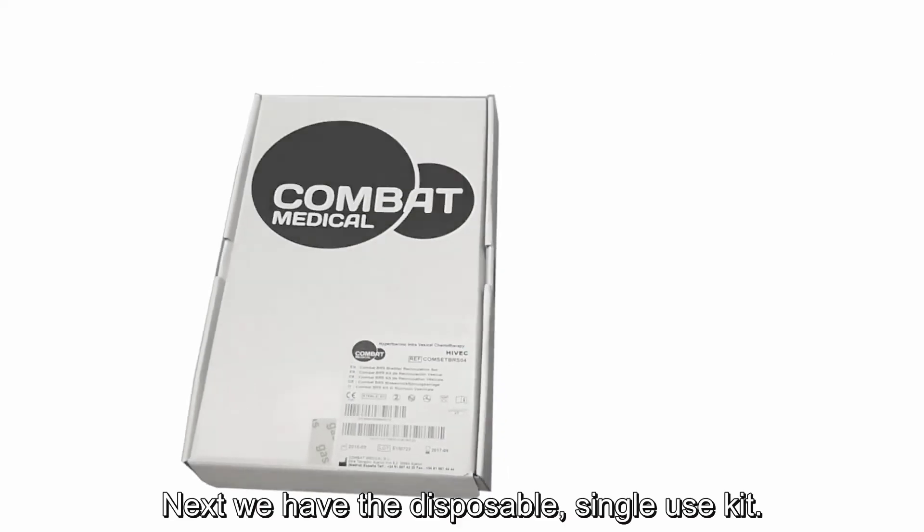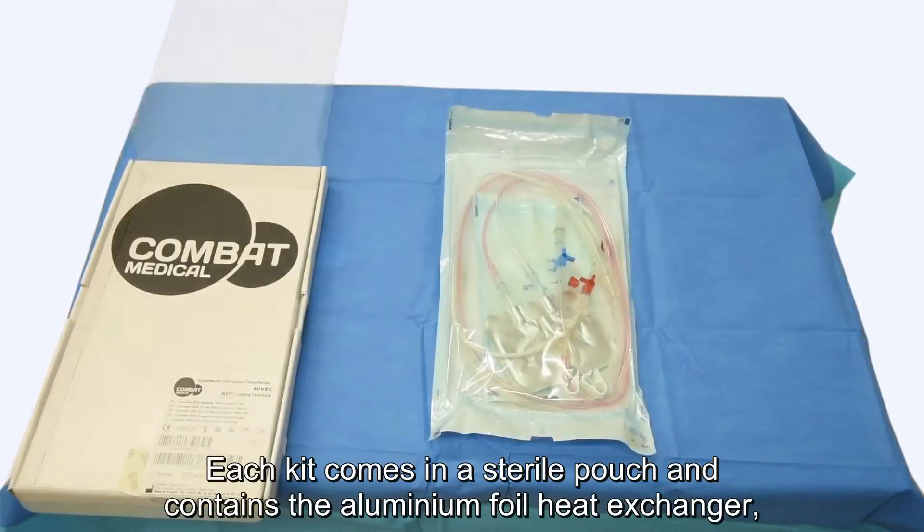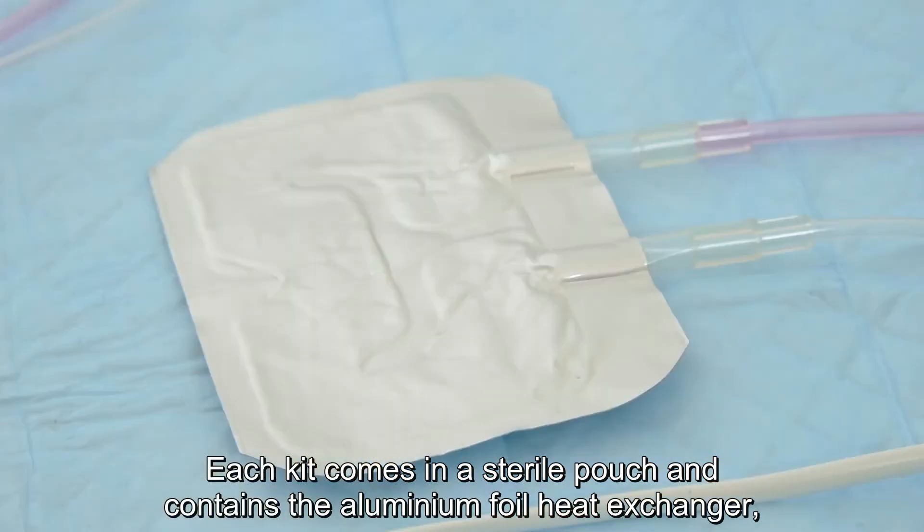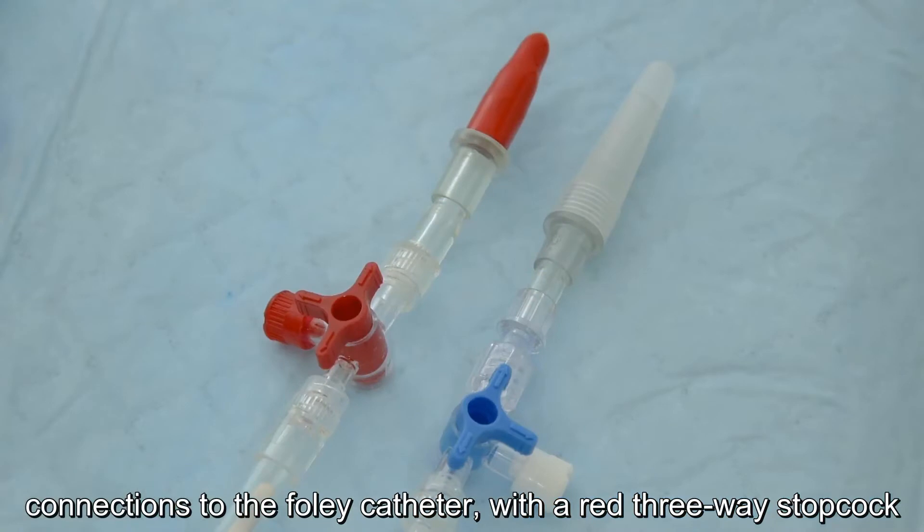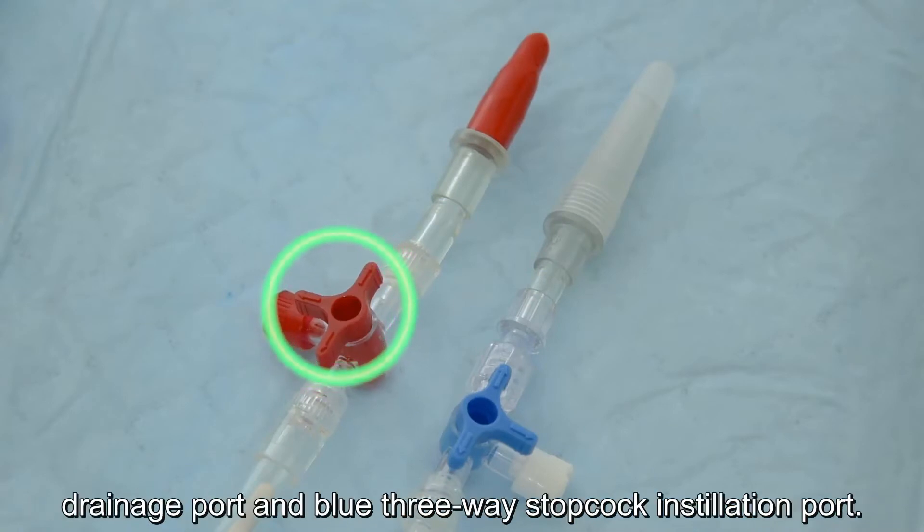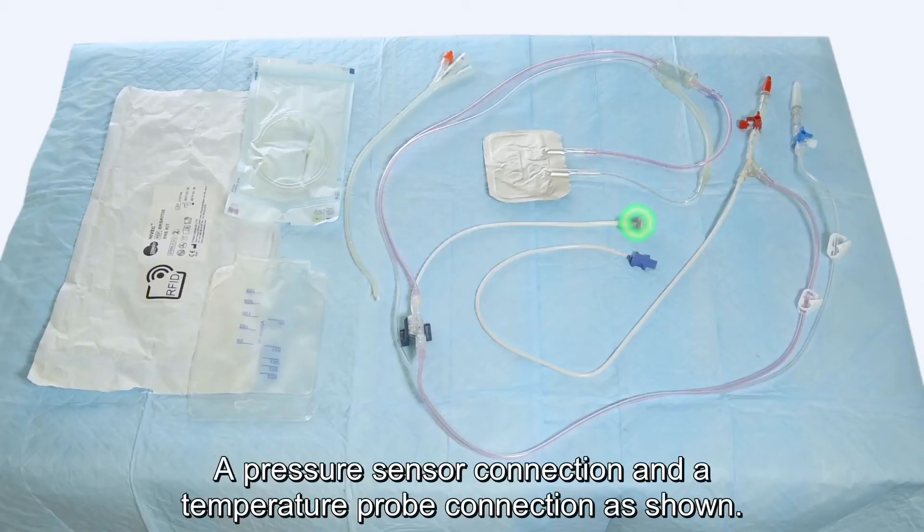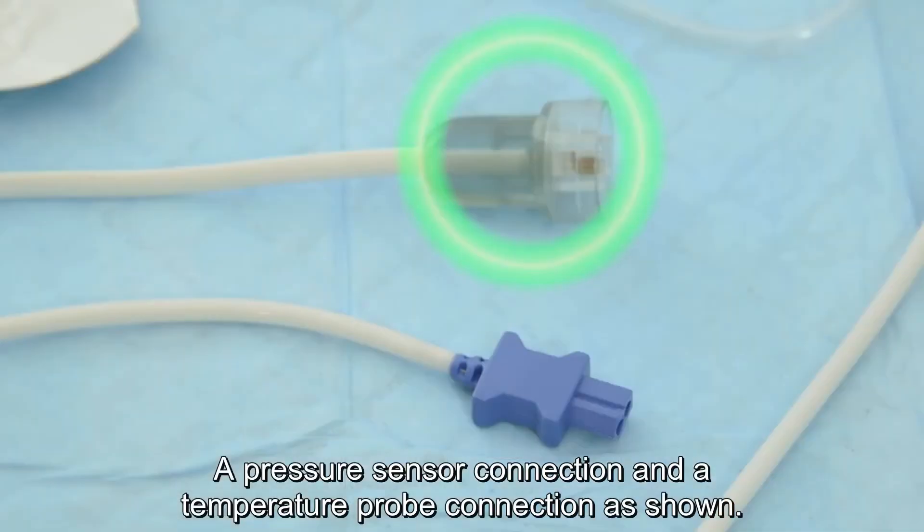Next we have the disposable single-use kit. Each kit comes in a sterile pouch and contains the aluminium foil heat exchanger, connections to the Foley catheter with a red three-way stopcock drainage port and a blue three-way stopcock installation port, a pressure sensor connection and a temperature probe connection.